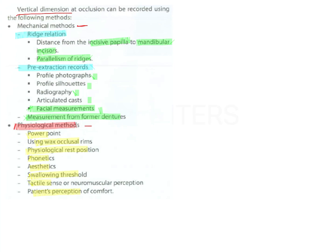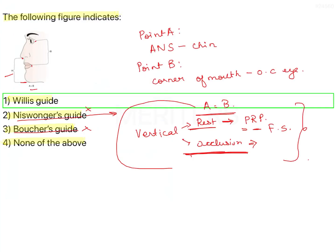What kind of questions can you anticipate from this topic? Profile photographs are an example of mechanical method, pre extraction record, ridge relation, all of the above. Type of those questions. Physiologic methods of assessment of vertical dimension include all except. So all these you have to remember. Phonetics and aesthetics, very important. Physiologic rest position, Niswonger's method, very important. So these are a few questions, few topics that you need to remember. So this is an example of this image is nothing but illustration of Willis guide option one.